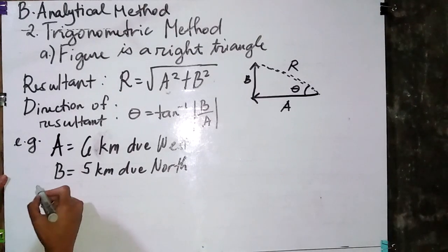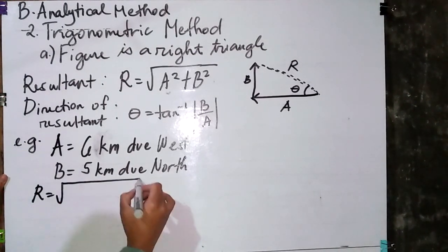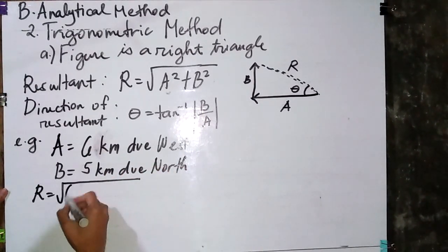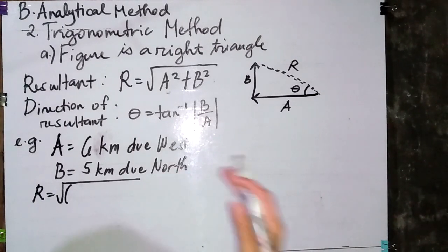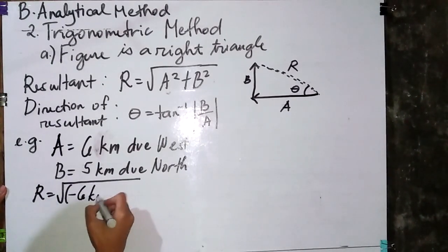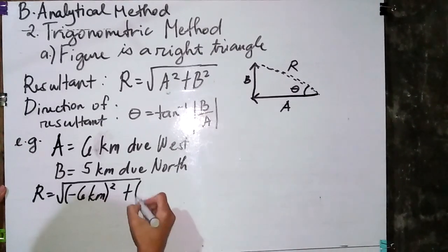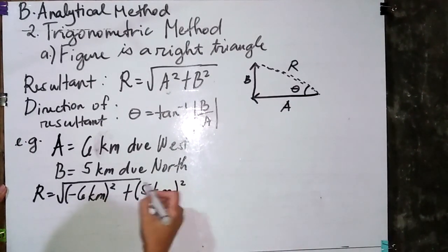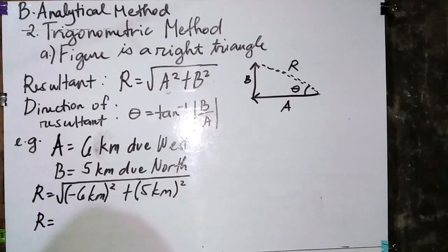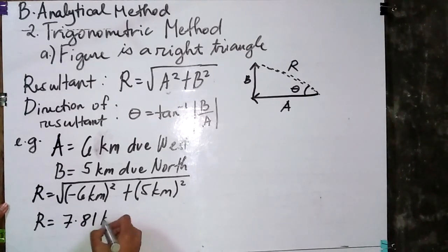Let's solve for the resultant by substituting into the square root of a squared plus b squared. Since west is along the negative x-axis, we consider the sign: negative 6 kilometers squared plus 5 kilometers squared. North lies on the positive y-axis. The answer is 7.81 kilometers.